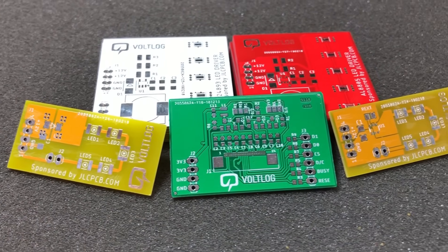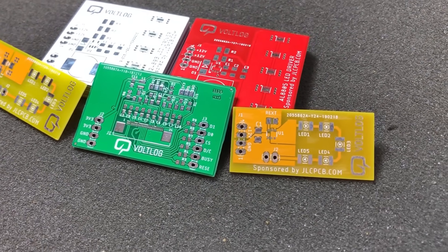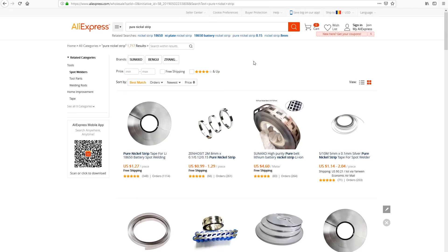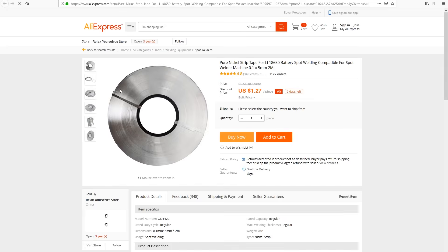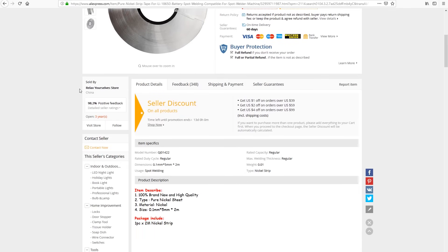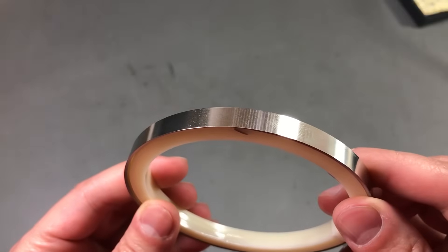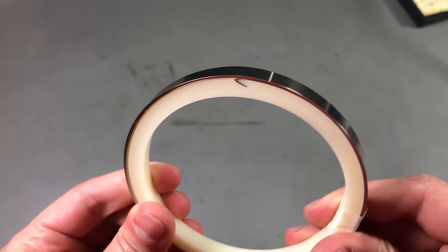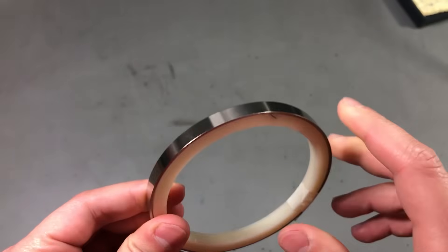But since steel is cheaper than nickel, you will often find on AliExpress products listed as pure nickel strips but are in fact just nickel-plated steel. It's hard to tell just by looking at the strip because they both look the same on the outside, they're both magnetic, they have pretty much the same weight.